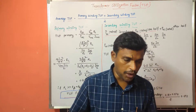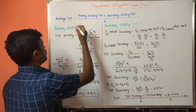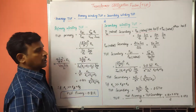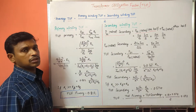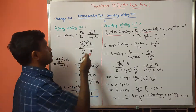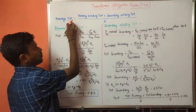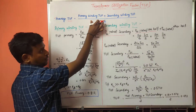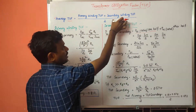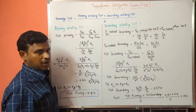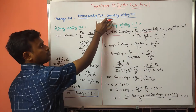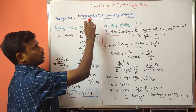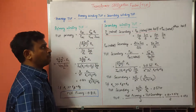Instead of directly calculating the transformer utilization factor, we are going to calculate the average transformer utilization factor. Because if you consider the primary winding, for 360 degrees there will be a current flow, but if you consider the secondary winding, the current flow will take place for only 180 degrees.